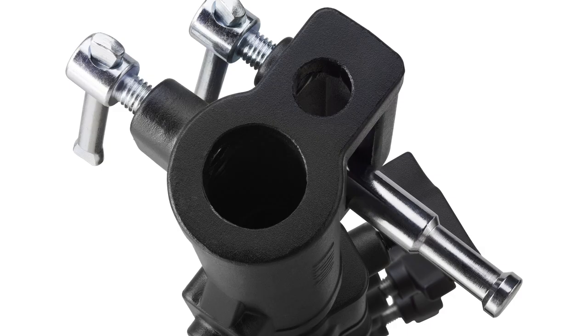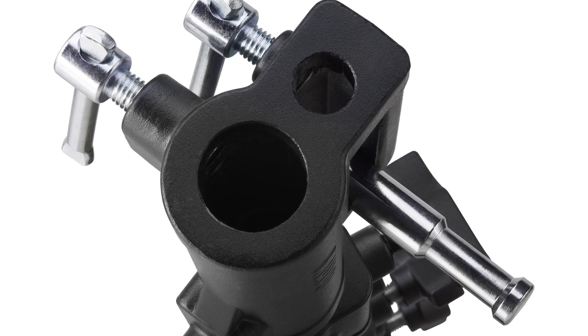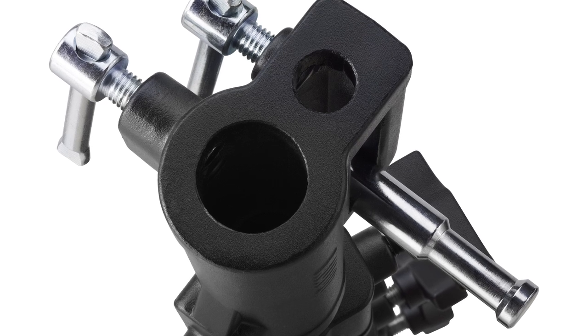The reason why this is called a combo stand is because the triple function universal combo head accepts both five-eighth inch baby or one and one-eighth inch junior size light fixtures and accessories. Typically, a combo stand has some version of this head.